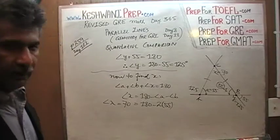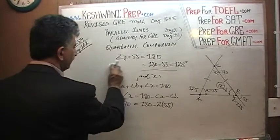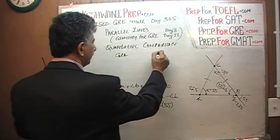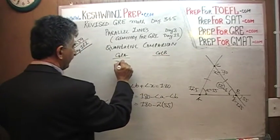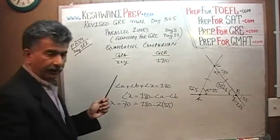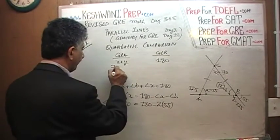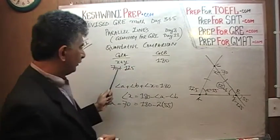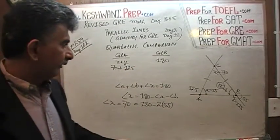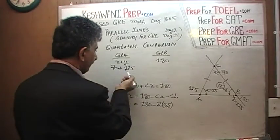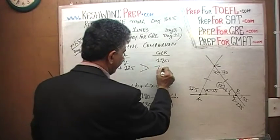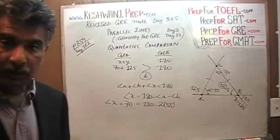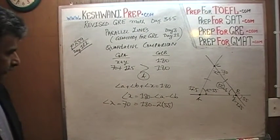Now we can solve our quantitative comparison problem. Column A is X plus Y and column B is 180. X equals 70 and Y equals 125. So X plus Y equals 195. Since 195 is more than 180, column A is greater. The answer is A. We are done with this problem.